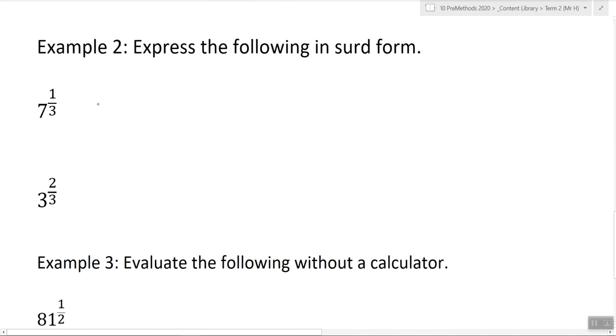Okay, this one. So we're just going back the other way. Going to surd form. Cube root of 7. So I'm just taking the number on the bottom and putting it in front of the surd root symbol thing. Does that make sense?